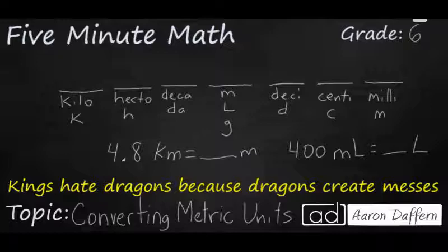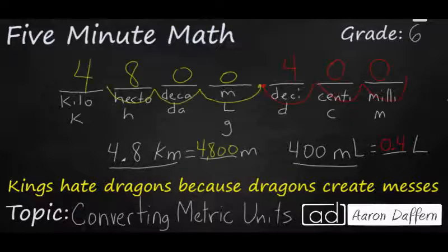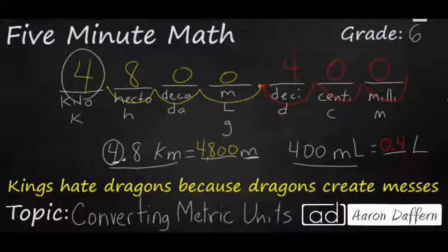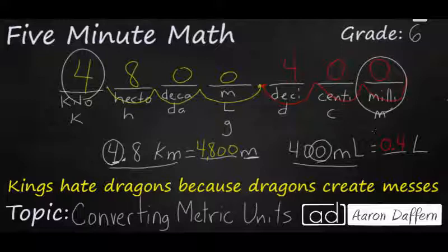Now it's time for you to try. Pause the video and see if you can make these two conversions. When you have your answers, unpause and check your work. For the first conversion in yellow, the 4 goes in the kilo spot, and moving to meters gives 4,800. For the second in red, the zero goes in the milli spot, and moving to liters gives 0.4, or four-tenths of a liter.